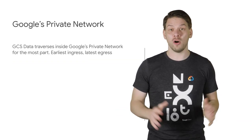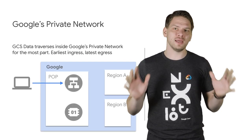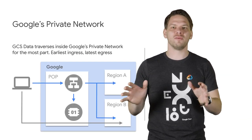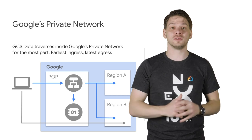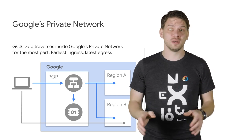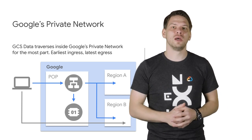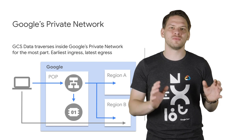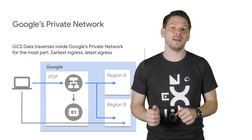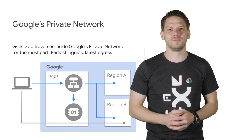First, our private network. Users' data enters and leaves Google's private network at a point of presence closest to them. This results in better performance, cost savings, and security, because data is traversing Google's network with encryption in flight and has the least possible exposure to the public internet.